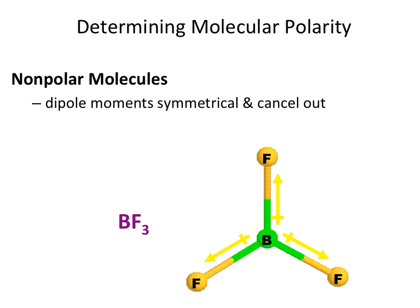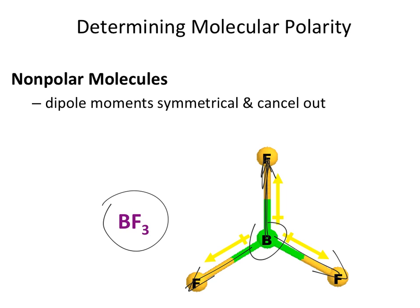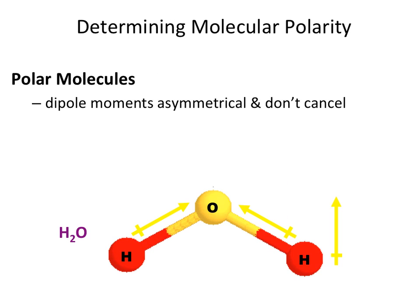BF3 has a trigonal planar shape where all bonds are equivalent and equally spaced, giving the molecule a high level of symmetry. Even though dipole moments exist within the individual bonds, the overall symmetry of the molecule cancels them out, resulting in a nonpolar molecule overall.